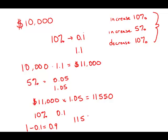And so, 11,550 times 0.9, and this, after a little bit of multiplication, this comes out to $10,395. This is the amount that she has in her account at the end of the third year, and this is answer choice B.